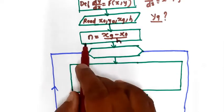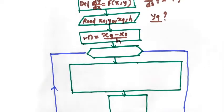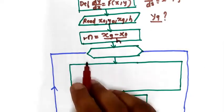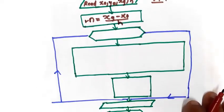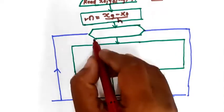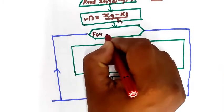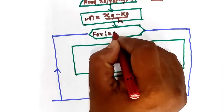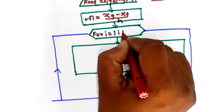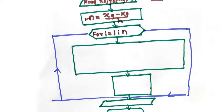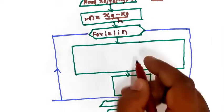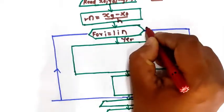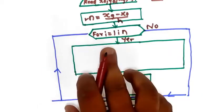The next step is to perform the calculated number of iterations. Since we have the value of n, the number of iterations to be performed requires a for loop: for i equal to 1 to n. Starting from 1 up to n, you have to calculate.